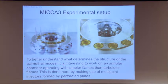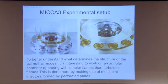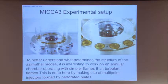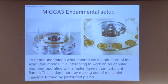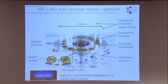Let's continue now. The idea here is to use, instead of the swirler, these matrix burners. This allows you to better understand what determines the structure of azimuthal modes, and the flames are simpler. We know the FDF of these flames, and the flow is laminar in these burners.